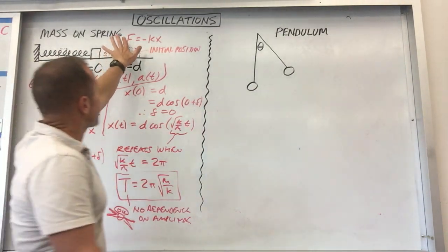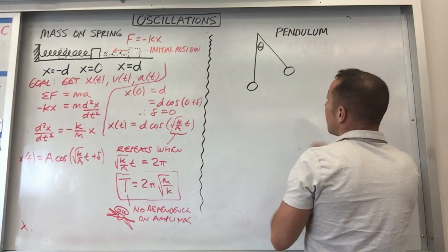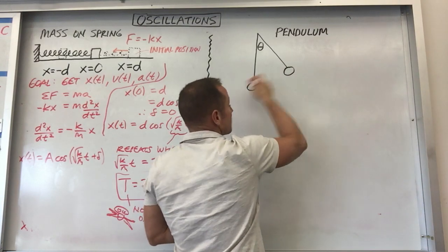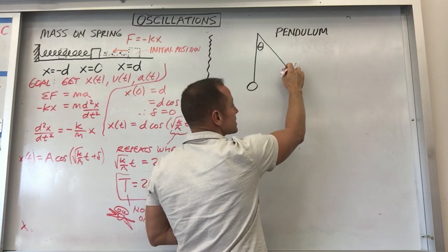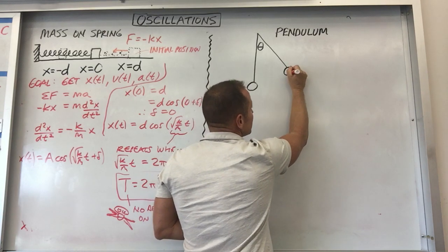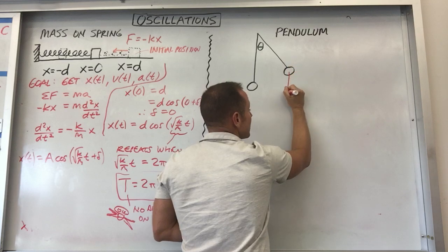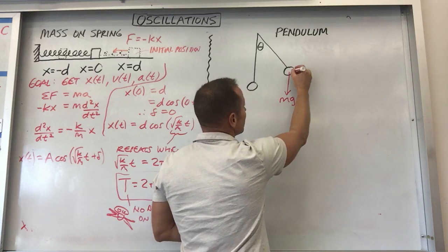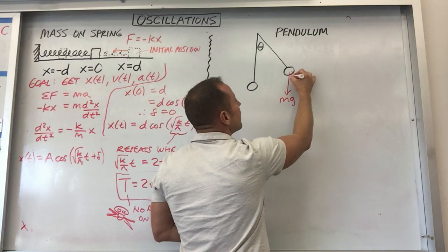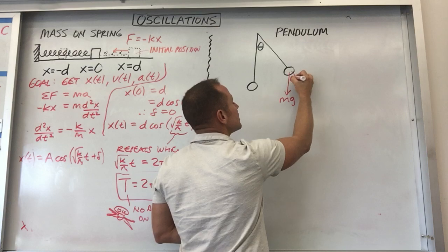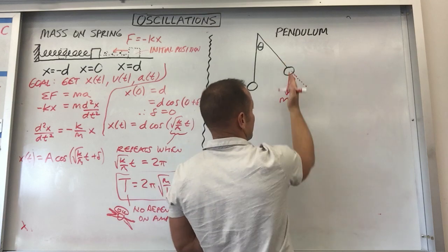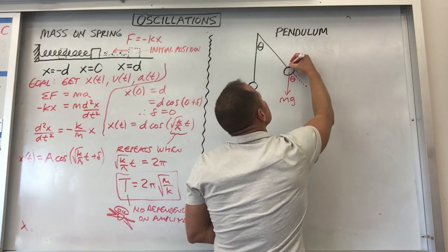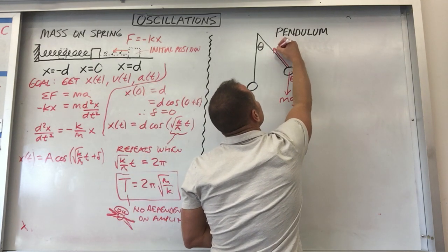Much like we did with the mass on the spring, to start to analyze how this is going to move, we want to put the forces down that are acting on the object that's going to swing back and forth. So I'm going to fixate on it while it's in this position. You'll have gravity pulling straight down like this, so I'm going to call the force of gravity mg. Something that's going to help us later is I'm going to also indicate this angle between that force and the line of the string. And then also pulling up this way is going to be the tension in the string.